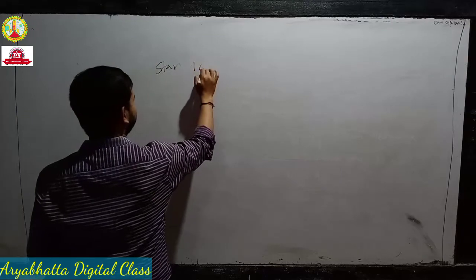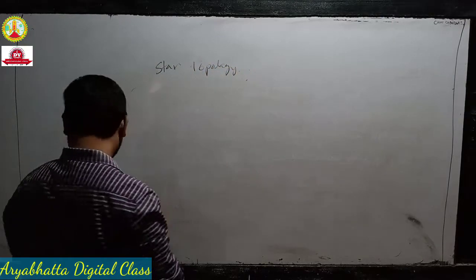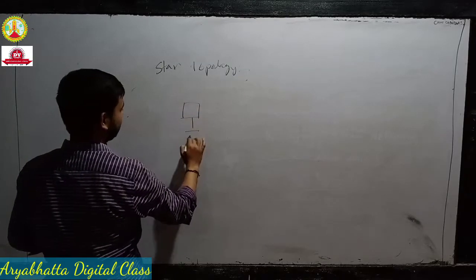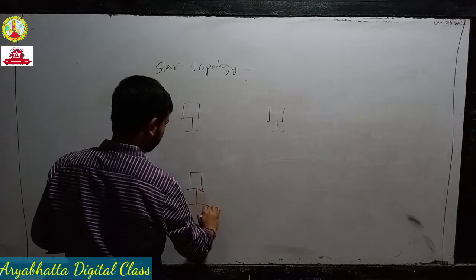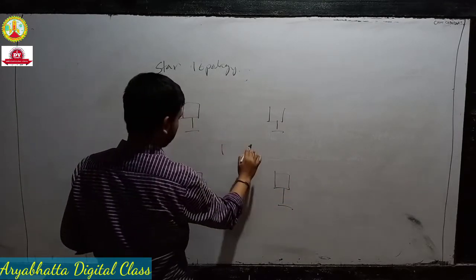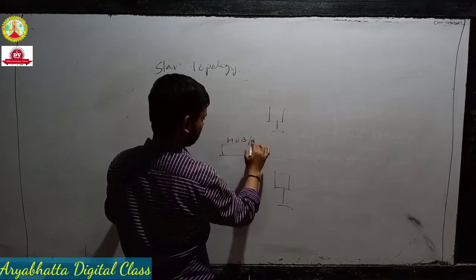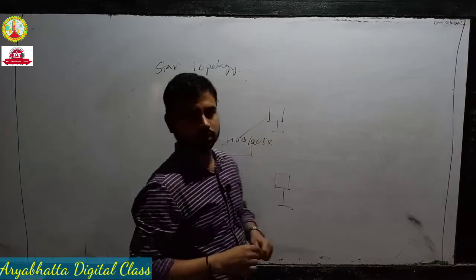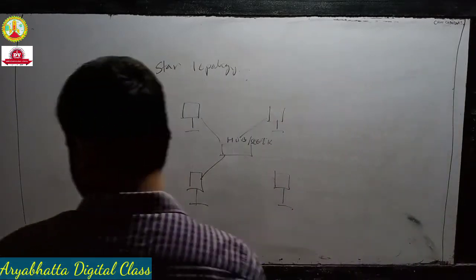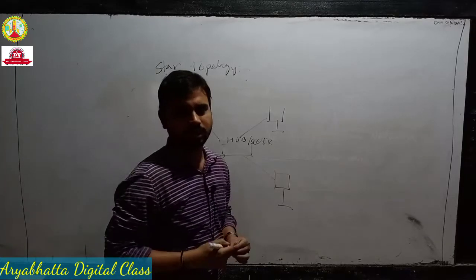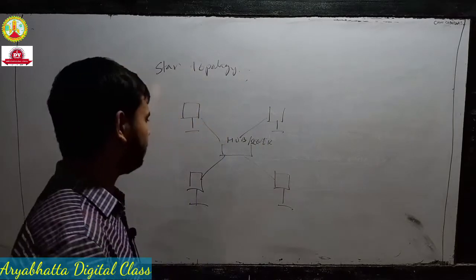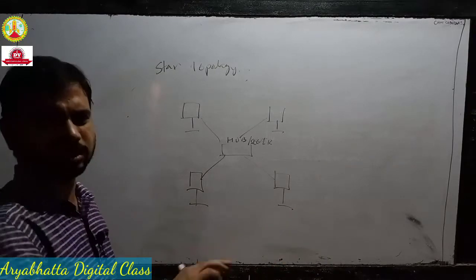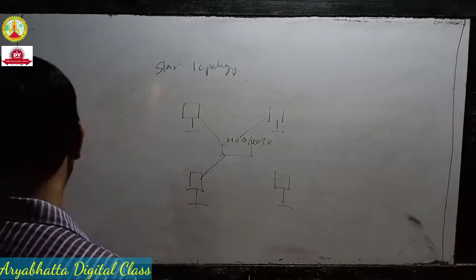In star topology the diagram is important. In the exam, if you draw the diagram that is very scoring. In star topology the pattern is like this: there are four hosts or computers and one main server or hub, and all are connected to it. This arrangement is called star topology. There are some advantages and disadvantages — you just read those.